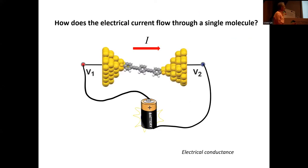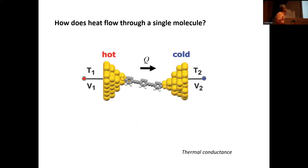Basically, what we want to do is understand how electrons pass through a single molecule. That means you have two electrodes connected to some voltage, and you get a current. The point is to understand how that current goes through the molecule and how that is related to the molecular properties — but not only the electron current, also the heat current. If you have a difference in temperature between the two electrodes, there will also be a heat current.